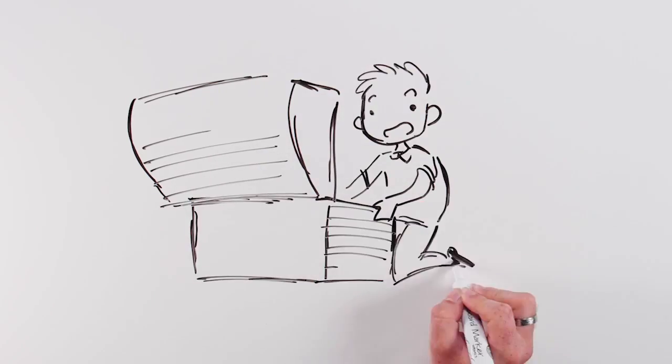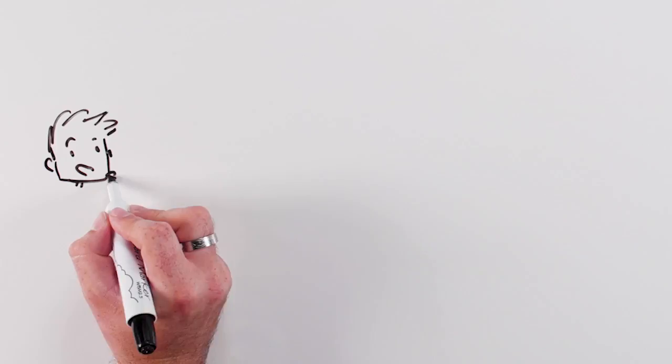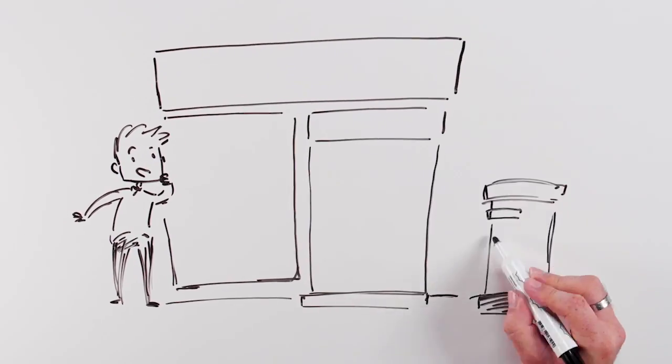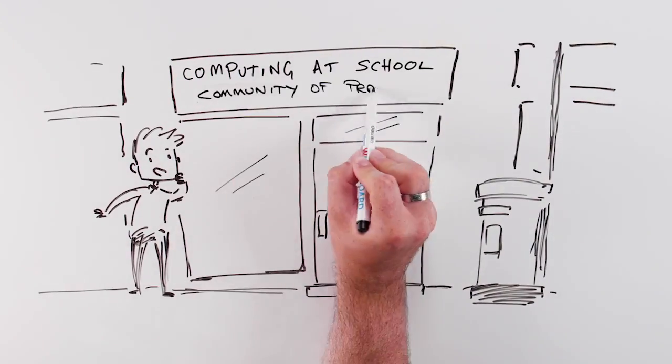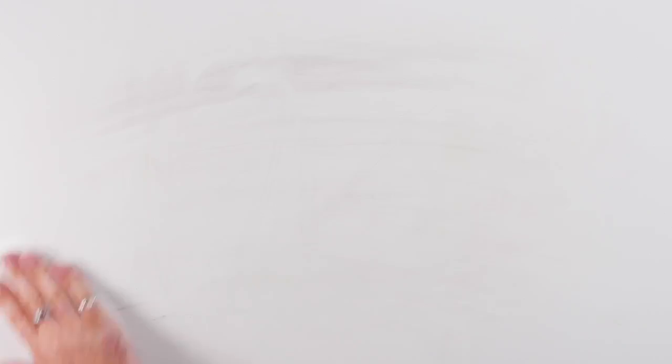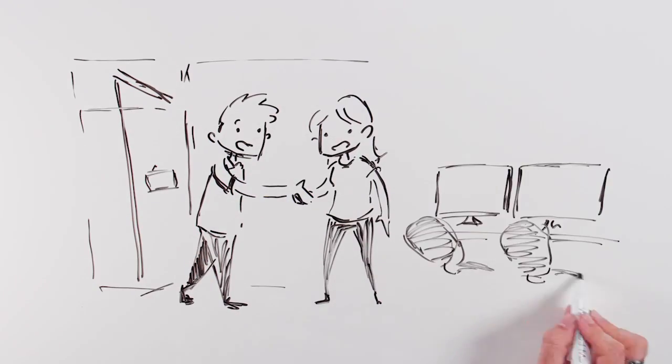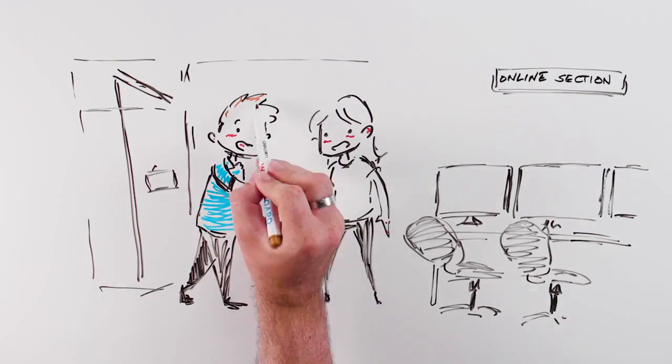So suppose you're a computing teacher, primary or secondary, what's available to you right now. Number one, you can join the Computing at School community of practice, a bottom-up, volunteer-driven, grassroots organization. There are local communities of practice where you can physically meet some of your colleagues and there's an online community and collection of resources you can draw on.